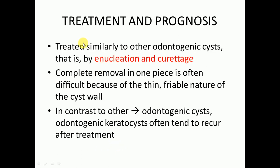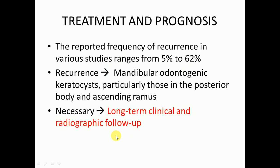OKC is treated similarly to other odontogenic cysts by enucleation and curettage. Complete removal in one piece is often difficult because of the thin, friable nature of the cyst wall. In contrast to other odontogenic cysts, OKC often tends to recur after treatment.